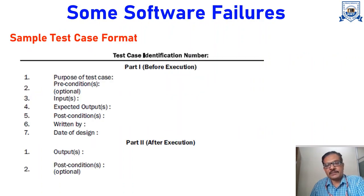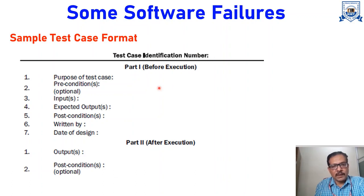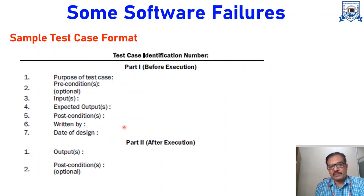Here is a sample test case format. A test case has an identification number such as test case 1, test case 2, test case 3. It has two parts: Part 1 is the before-execution part and Part 2 is the after-execution part. In Part 1, you write the purpose of the test case, preconditions if any (optional), inputs (compulsory), expected outputs, post-conditions, the name of who wrote it, and the date of design of the test case.